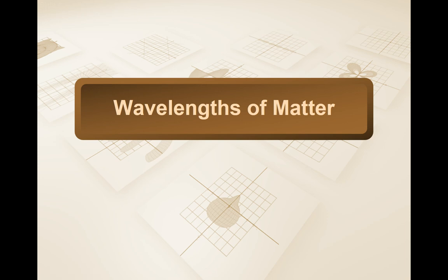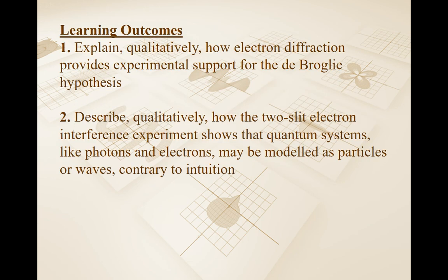Hello again, Physics 30s. In today's lesson, we are going to wrap up the modern physics unit of study by talking about a relatively complicated topic dealing with wavelengths of matter. Our learning outcomes are to: one, explain qualitatively how electron diffraction provides experimental support for the de Broglie hypothesis, and two, describe qualitatively how the two-slit electron interference experiment shows that quantum systems like photons and electrons may be modeled as particles or waves, contrary to intuition.